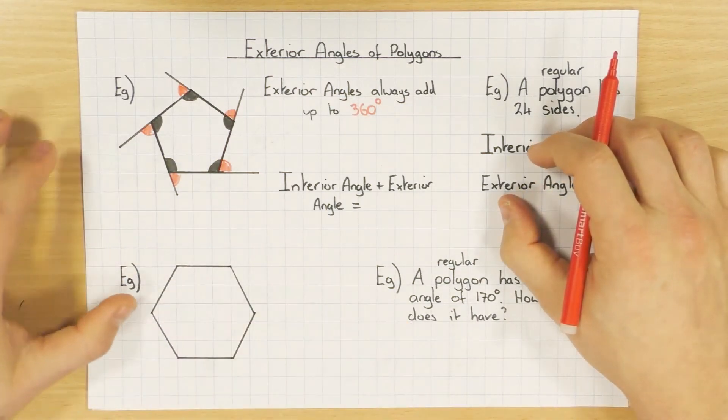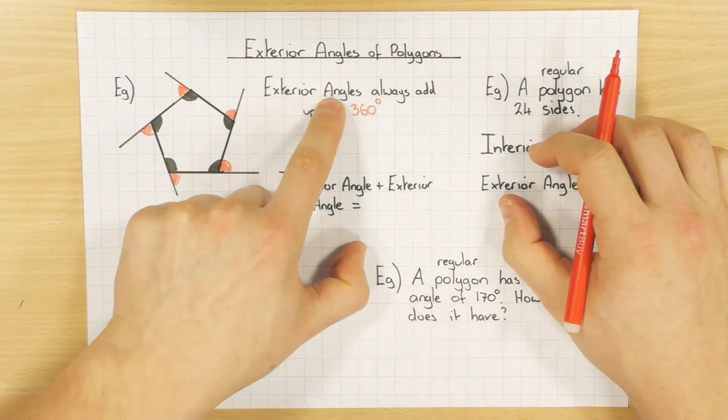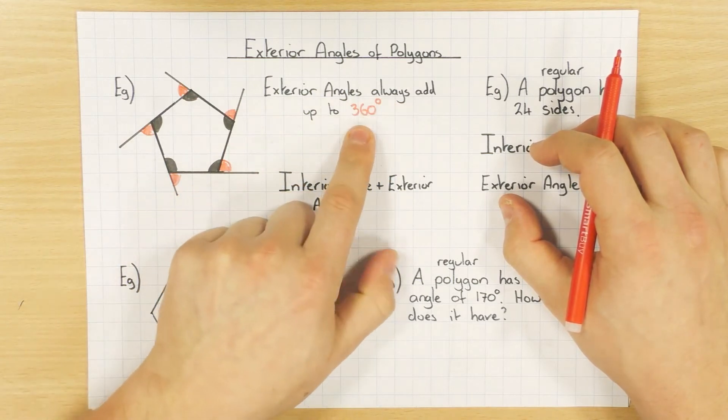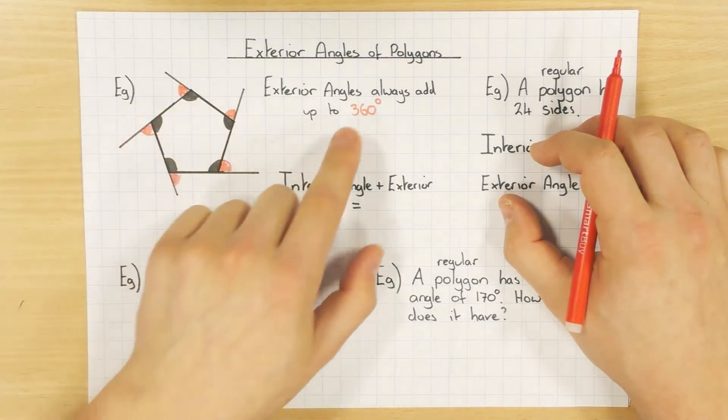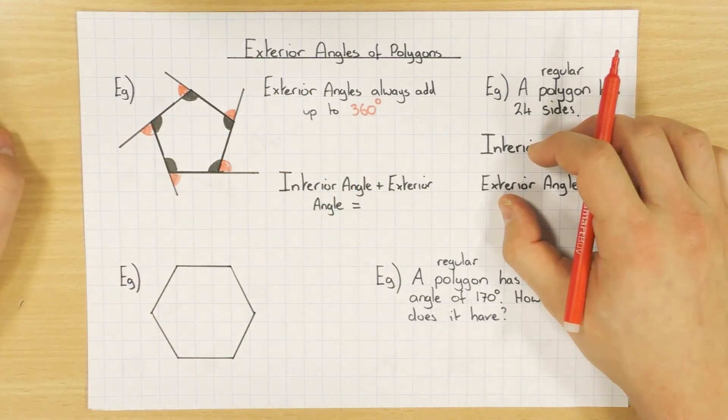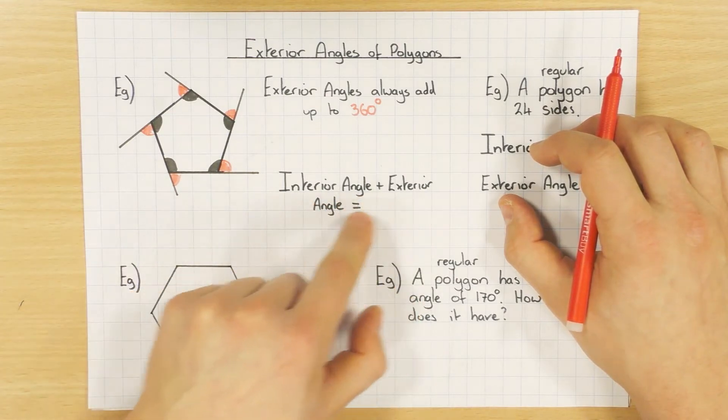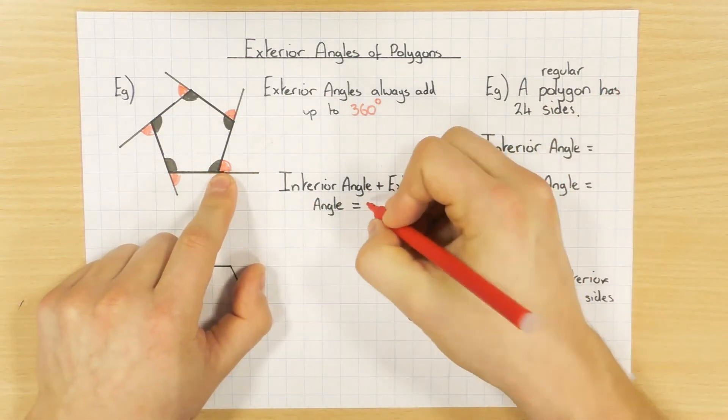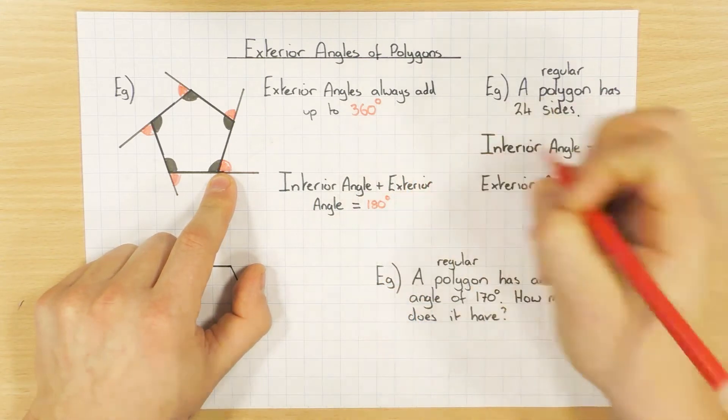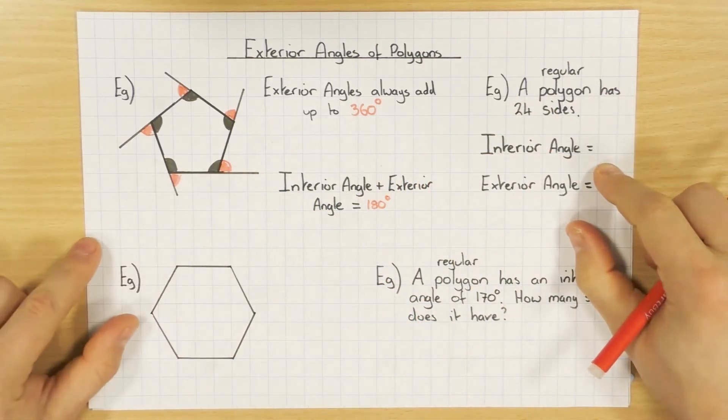The first fact that you need to know is that all exterior angles always add up to 360, whether the shape is regular or irregular. And because it's on a straight line, interior and the exterior angles add together to make 180 degrees.